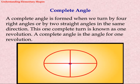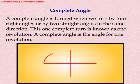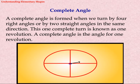Complete angle: A complete angle is formed when we turn by four right angles or by two straight angles in the same direction. This one complete turn is known as one revolution. A complete angle is the angle for one revolution.